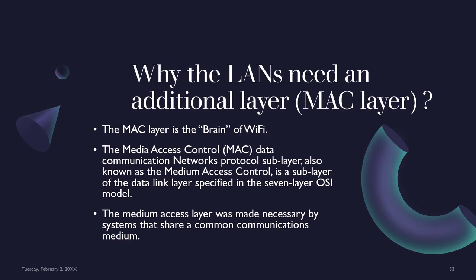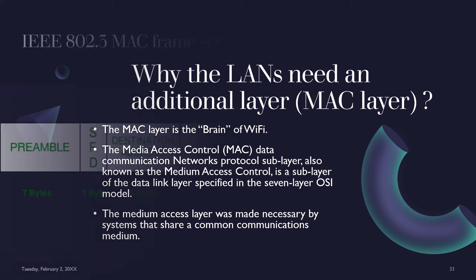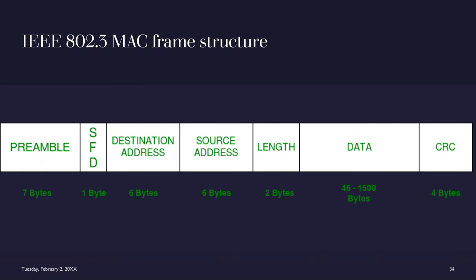The MAC (Medium Access Control) layer is the brain of Wi-Fi. It is a sublayer of the data link layer specified in the 7-layer OSI model, made necessary by systems that share a common communication medium. The MAC frame structure includes: MAC control (containing MAC protocol information), priority destination MAC address and destination physical attachment point, source MAC address and source physical attachment point, and CRC (Cyclic Redundancy Check) for error detection.